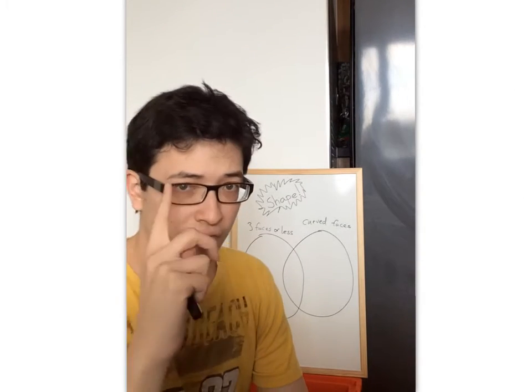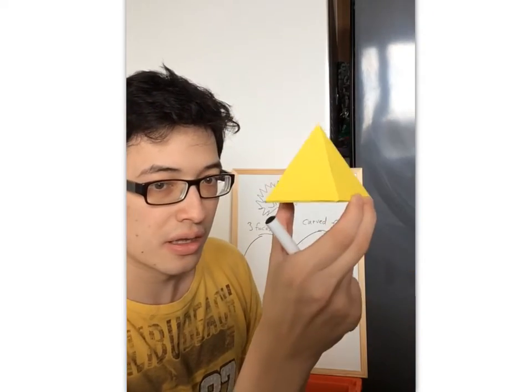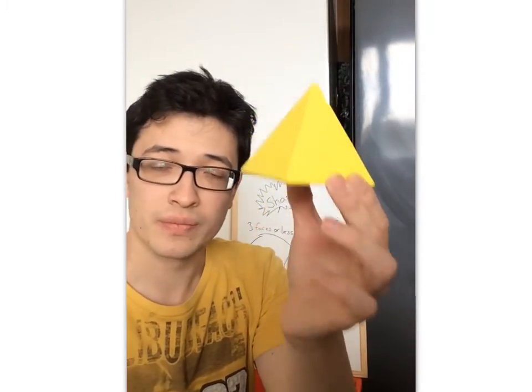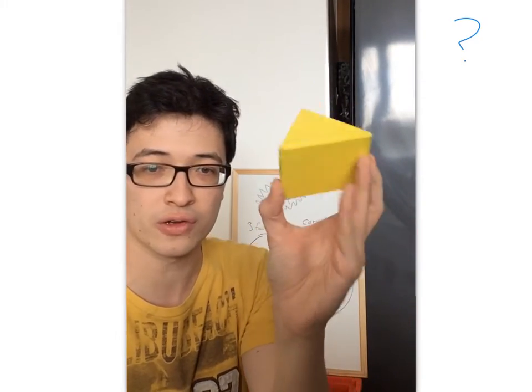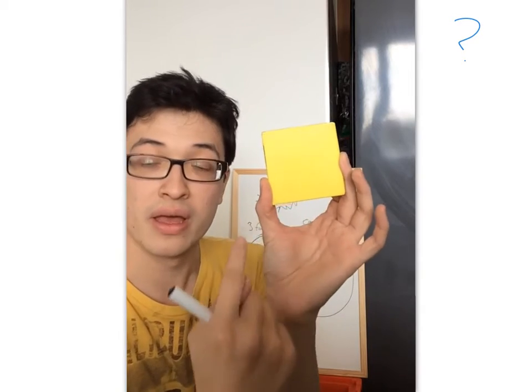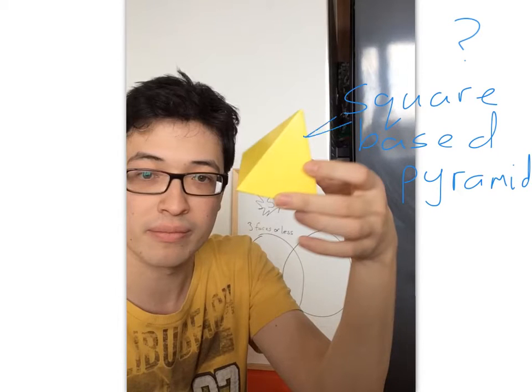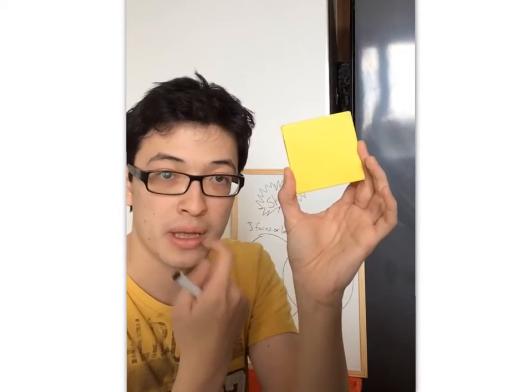So for our very first shape, we have got... Ta-da! Any idea what this shape is called? Well, super easy way to tell what shape this is called. Because if you look at the base of the shape, it's a square face. So we call this shape a square-faced pyramid. It looks like a pyramid, and it's got a square base.